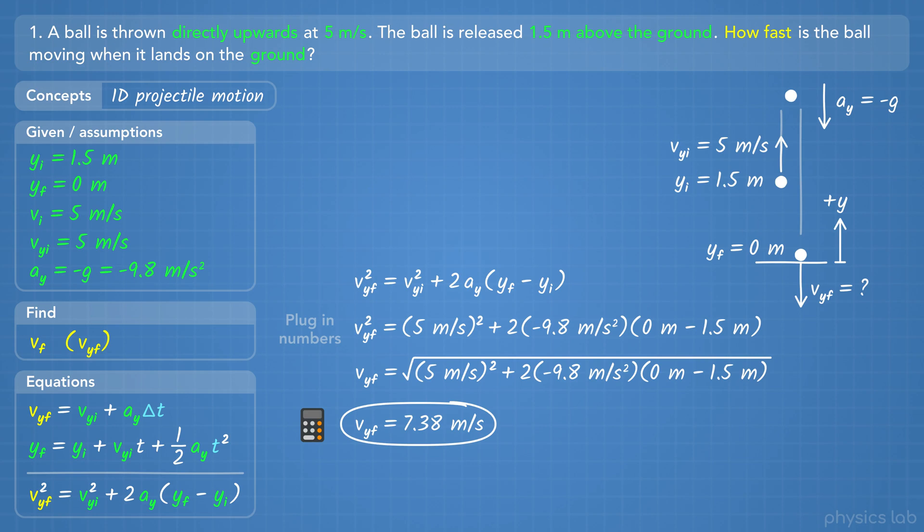You can think of this equation as using speed instead of velocity, because v is squared in the equation. So even if the velocity is negative, it'll be positive when you square it. So this answer is the final speed of the ball, which is what we want. The final velocity would be negative 7.38 m per second, because the ball would be moving in the negative y direction.